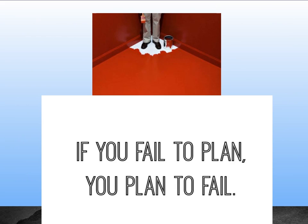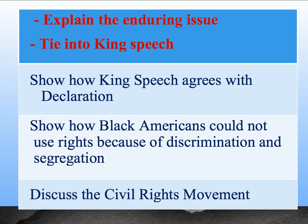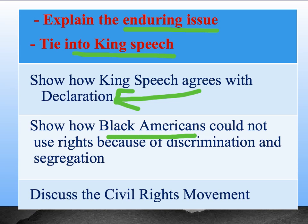Now that we've read our prompt and passage, it's time to create a plan. As my father always used to tell me, if you fail to plan, you plan to fail. What we're going to do is write four short paragraphs about how we're going to tie these two parts of our source text together. In our first paragraph, we're going to explain the enduring issue — what was that quote from the Declaration talking about — and then tie it into what Dr. King was saying in his speech. We'll show that King agrees with what the Declaration was saying, but also points out that black Americans in the 1960s could not use those rights because of discrimination and segregation. Finally, we'll discuss the civil rights movement for historical context.